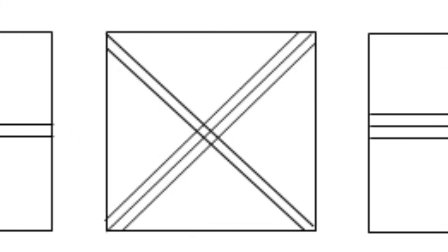In the second pattern, the lines change positions and become diagonal. Also the number of lines increases from 4 to 5.